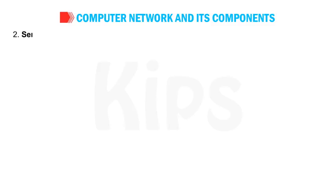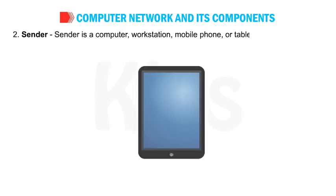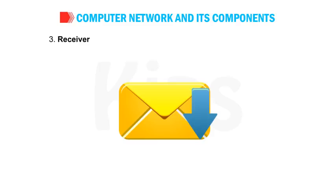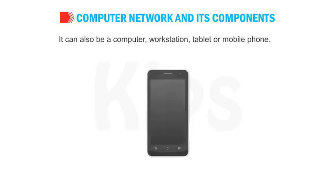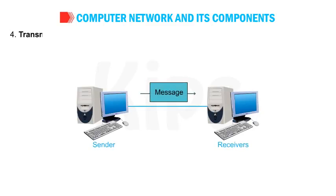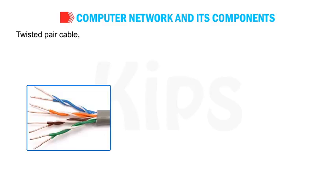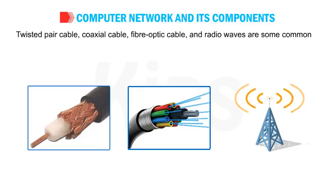Number 2: Sender — a sender is a computer, workstation, mobile phone or tablet that sends the data message through a web browser. Number 3: Receiver — a receiver is a device that receives the data messages. It can also be a computer, workstation, tablet or mobile phone. Number 4: Transmission medium — it is the physical path through which the message travels from the sender to the receiver. Twisted pair cable, coaxial cable, fiber optic cable and radio waves are some common examples.